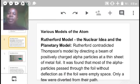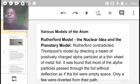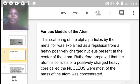Rutherford's model is the idea of nuclear and planetary model. Rutherford contradicted Thomson's model by directing a beam of positively charged alpha particles at a thin sheet of metal foil. It was found out that most passed through the metal foil without deflection, as if the foil were empty space. Only a few were diverted. Some actually bounced back in the same path, leading to scattering.